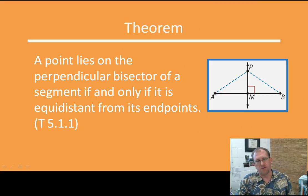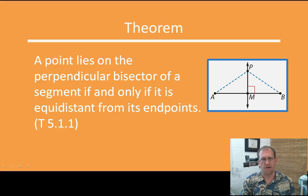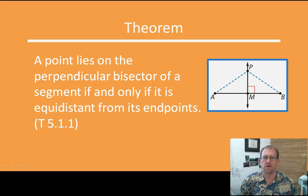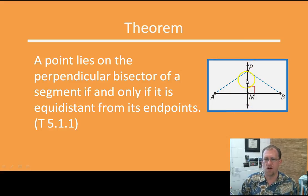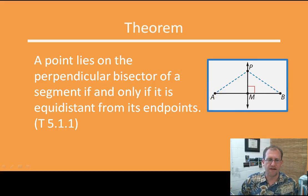The first thing we need to do is review the idea of a perpendicular bisector. We've constructed these before and talked about them before, and now we're going to introduce another feature. A point lies on a perpendicular bisector of a segment if and only if it's equidistant from its endpoints. In other words, you can take any point along a perpendicular bisector, and that point will be equidistant from the two endpoints of the segment that this line is a perpendicular bisector to. This line is constructed of a set of points that are equidistant from the endpoints of the segment.